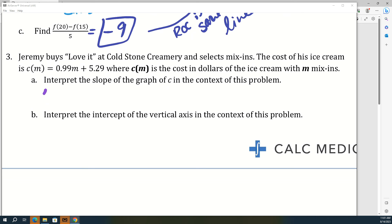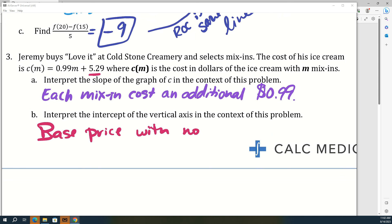Very good. So each mix-in costs an additional 99 cents. Alright, and I worded this one kind of weird because I didn't want to say y-intercept because there's not a y here, it's c and m. So I called it the vertical axis intercept, which is basically the same. The intercept in this problem is this 5.29. So what do you think that means in the context of this problem? Very good. So the base price with no mix-ins. Alright, so what questions do you guys have about linear functions and rate of change?